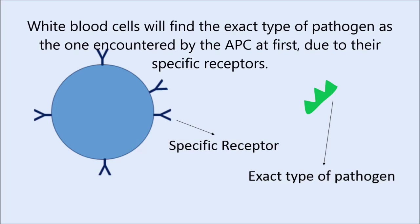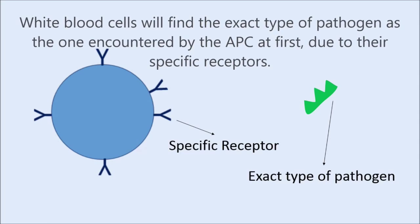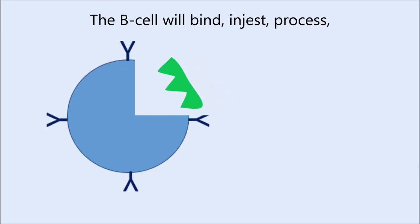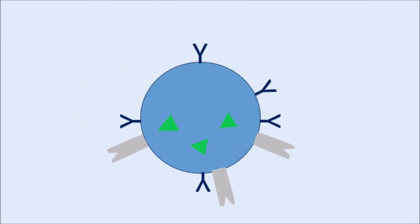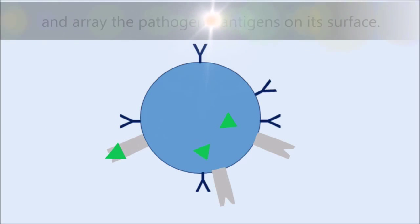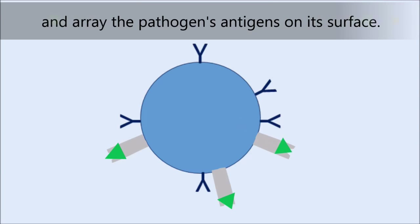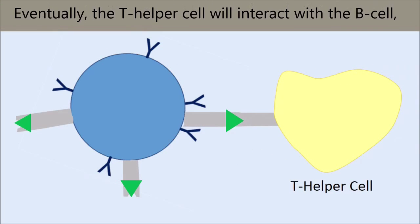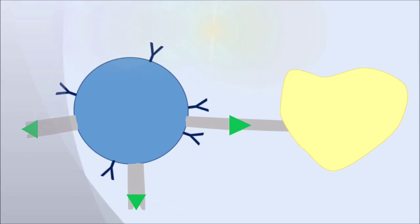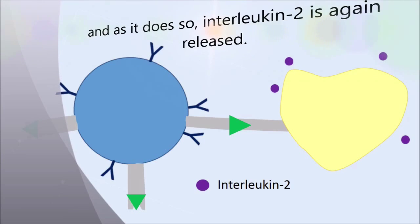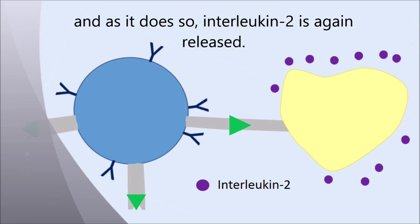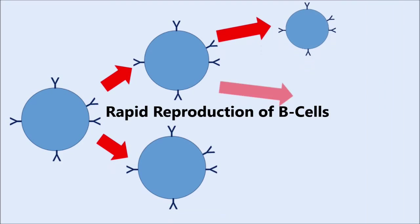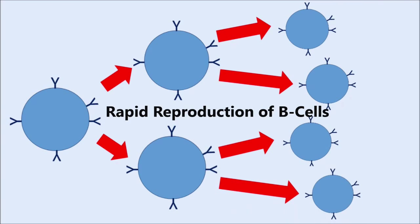Naive B cells, or white blood cells, will find the exact type of pathogen as the one encountered by the APC at first, due to their specific receptors. The B cell will bind, ingest, process, and array the pathogen's antigens on its surface. Eventually, the T helper cell will interact with the B cell, and as it does so, interleukin-2 is again released, causing the proliferation of the B cell.